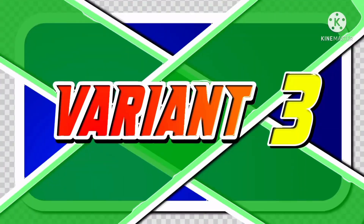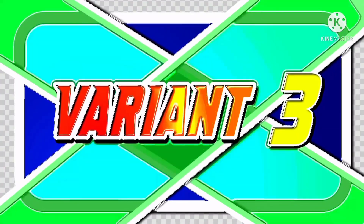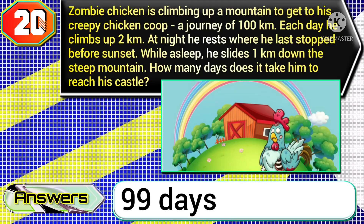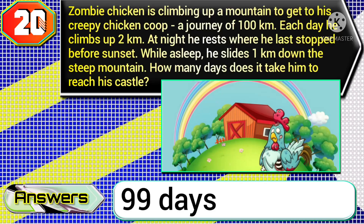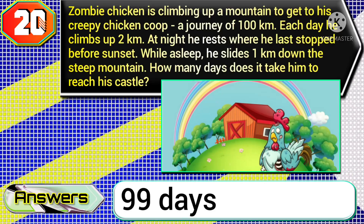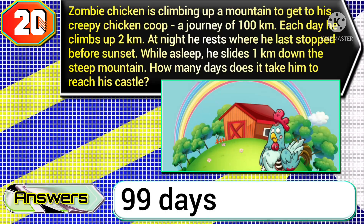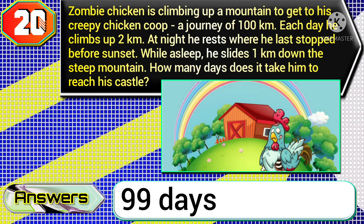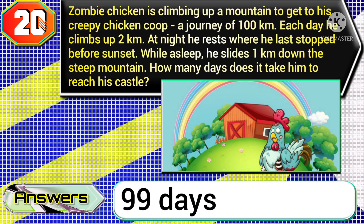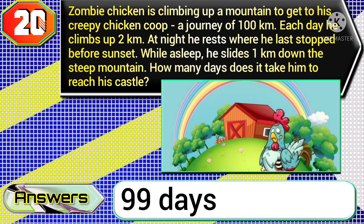At last, in variant three: if they ask you 'a journey of 100 kilometers,' then you need to type the answer 99 days.